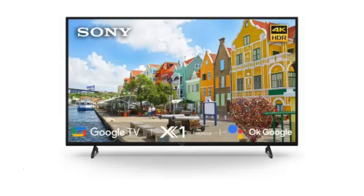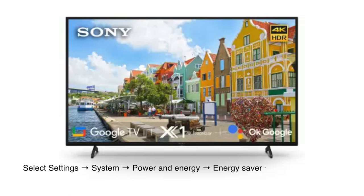Since we don't have access to an Android TV, I got this information from Sony's website. On a Sony TV with Google or Android TV, go into Settings, select System, then Power and Energy, then Energy Savings, then Power Savings, and put it off. There is a low and high option on some Sony TVs, but I recommend you put it off.